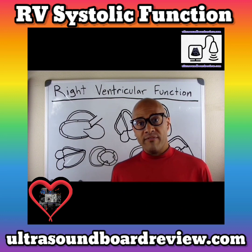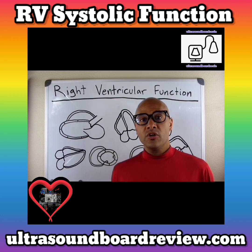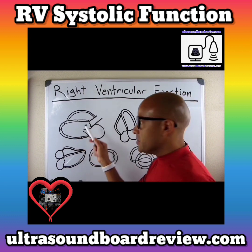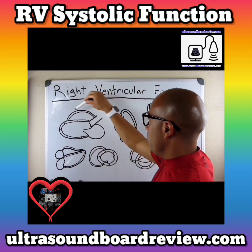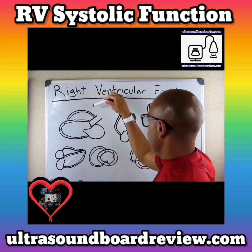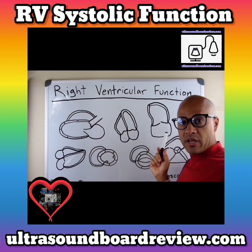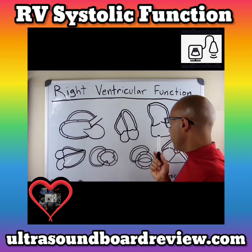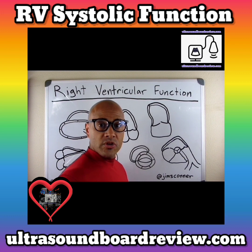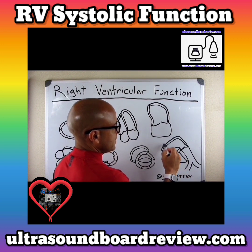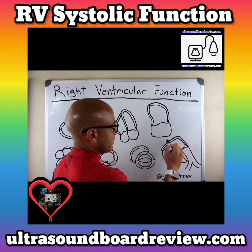In order to determine right ventricular systolic function with echocardiography, you're going to want to obtain as many views as possible. You'll want to start with the parasternal long axis, in which you will see the anterior wall of the right ventricle. Then you'll obviously want to get the apical four-chamber view. You'll also want to get a good view of the RA-RV inflow. In the short axis view, focus on the RV walls — here at the aortic level you can see the wall connecting to the pulmonary artery.